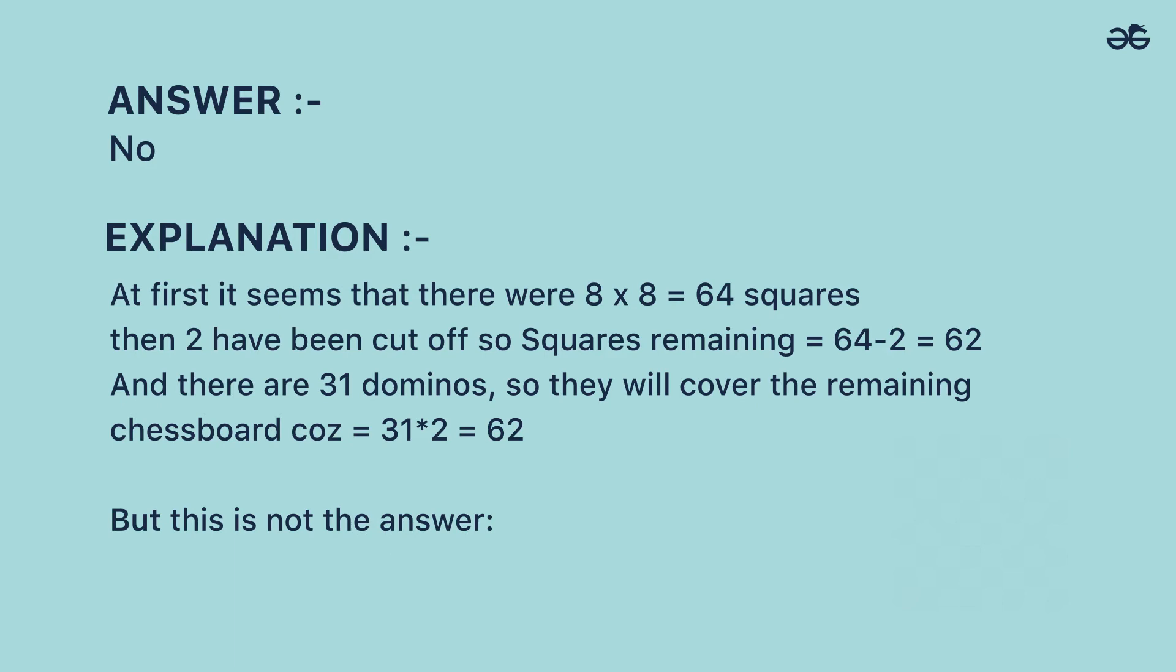And there are 31 dominoes, so they will cover the remaining chessboard because 31 multiplied by 2 is equal to 62. But this is not the answer.